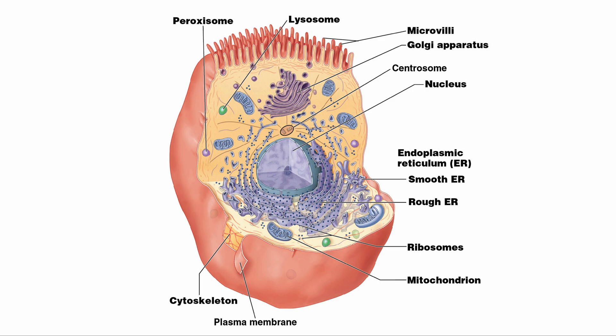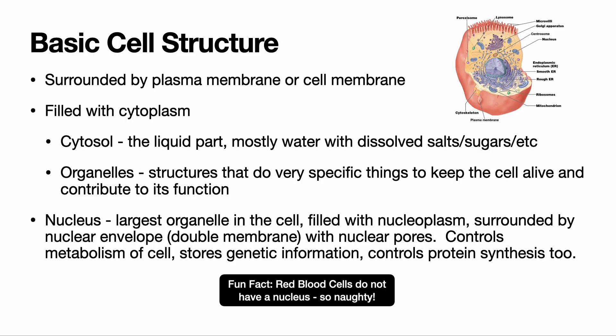Here's a classic rendition of a cell identifying many of the organelles we're going to talk about. You want to be able to recognize, identify, name, spell, and describe the basic structure and function of each organelle. The organelles are all the smaller structures that help compartmentalize the functions of the cell — each organelle does a specific thing that contributes to its overall function.